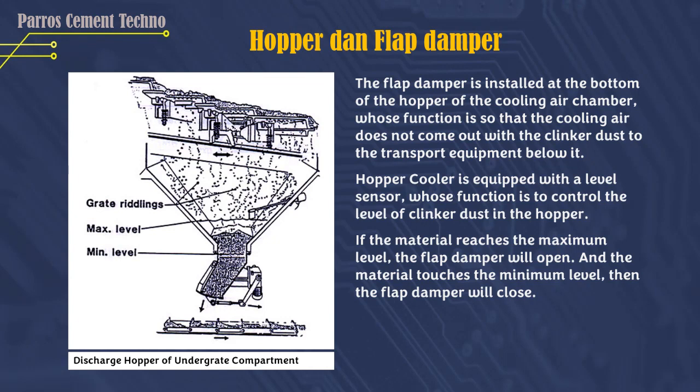Hopper and Flap Damper. The flap damper is installed at the bottom of the hopper of the cooling air chamber, whose function is to prevent cooling air from coming out with the clinker dust to the transport equipment below it. The hopper cooler is equipped with a level sensor whose function is to control the level of clinker dust in the hopper. When the material reaches the maximum level, the damper flap will open. When the material touches the minimum level, the flap damper will close.